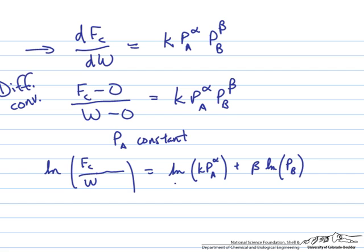And if we do that, then we'll take the log of both sides and arrange it like this, where because the pressure of A is constant, we can lump it in with this constant term.